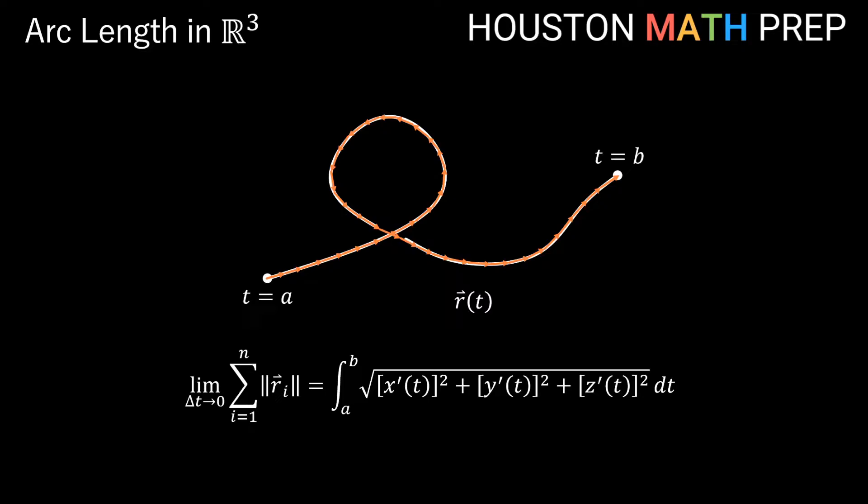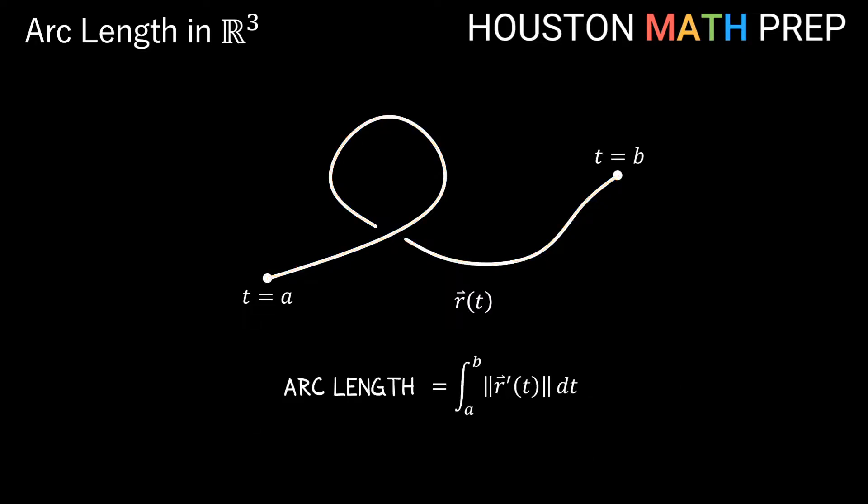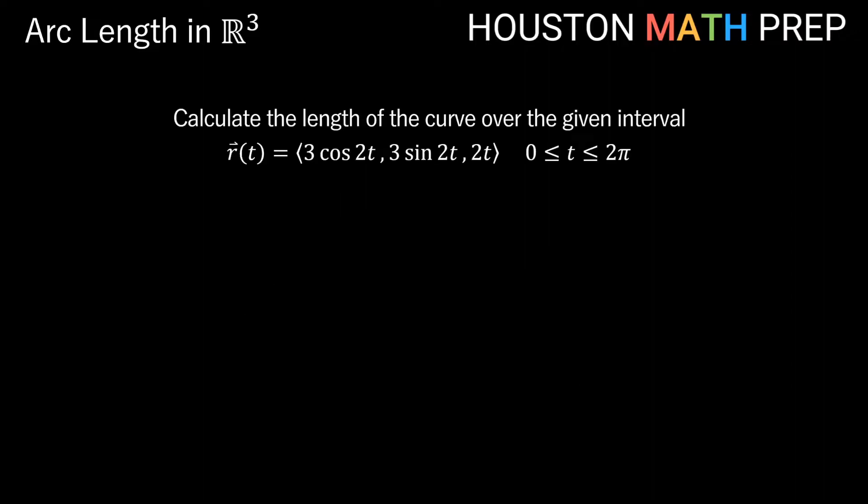And in fact it is the magnitude formula for the derivative of this vector-valued function. So much easier here than what we started with with all those approximations, our actual exact formula for finding the arc length from a to b on this curve will be the definite integral from t equals a to t equals b of the magnitude of r prime of t with respect to t. We're going to work two examples here in the video for you.